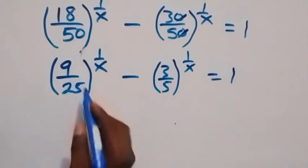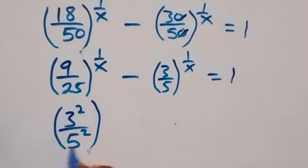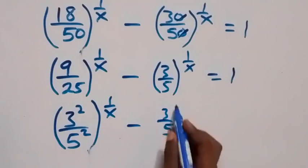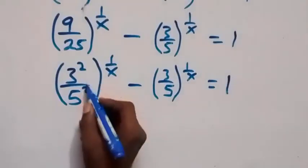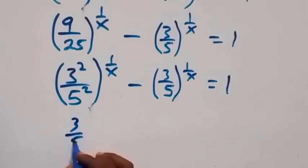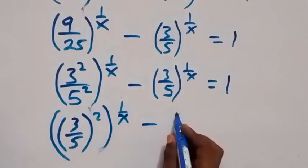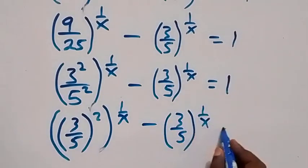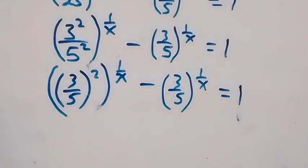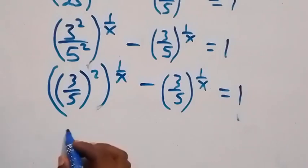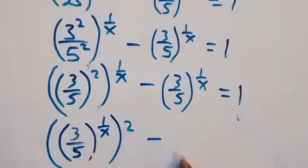We can also write 9 over 25 as 3 squared over 5 squared, raised to power 1 over x, minus 3 over 5 raised to power 1 over x, equals to 1. From here in the next step we can interchange the powers, using the law of indices.